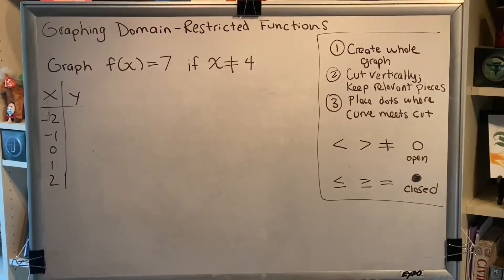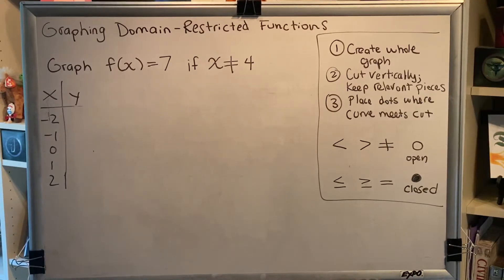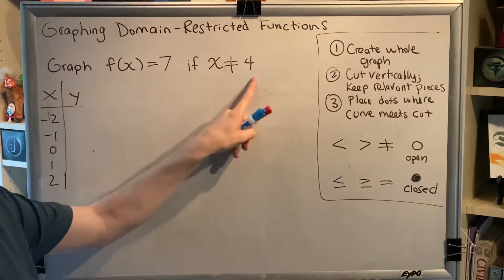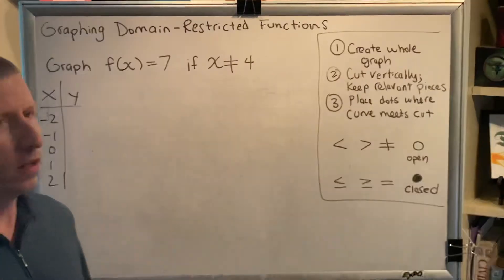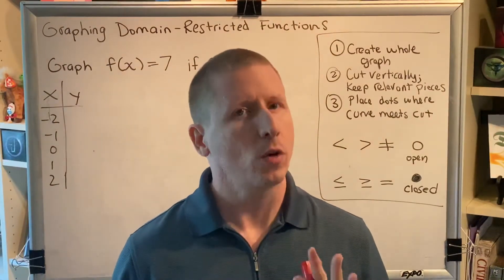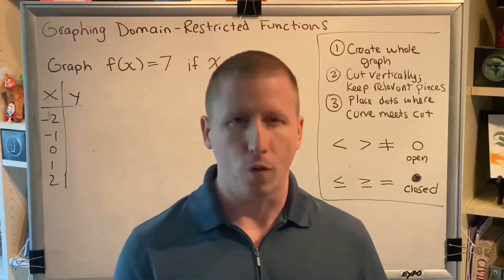The topic of this video is graphing domain restricted functions. Let's look at a problem. Graph f(x) equals 7 if x is not equal to 4. I've included this problem for this reason right here, x is not equal to 4. This is a little bit tricky and it causes students to stumble from time to time, so it's my hope that by watching this video you will avoid that fate.